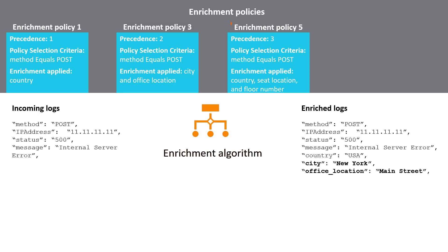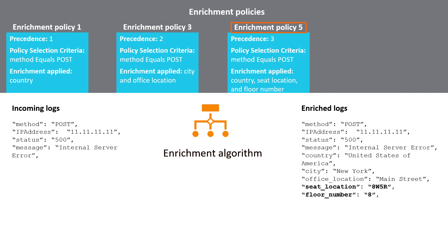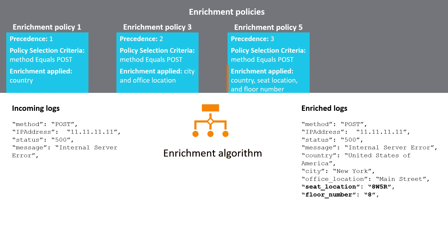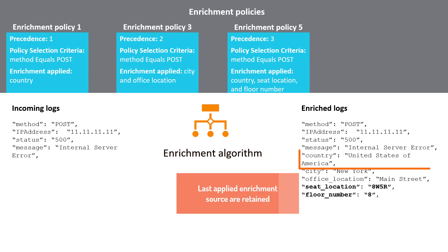Finally, enrichments configured in enrichment policy 5 are applied and the seat location and floor number are added to the logs. Also, note that the country information is updated. Country information was first added by enrichment policy 1 and the value is USA. However, after enrichment policy 5 is applied, the country value configured in the enrichment source of enrichment policy 5 is updated in the logs. It is because enrichments from the last applied enrichment source are retained.